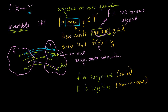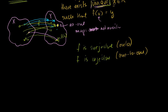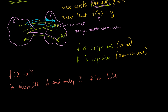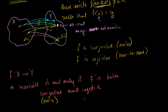Using the terminology from the last video, we can restate the condition for invertibility: a function mapping from domain X to codomain Y is invertible if and only if f is both surjective and injective. Equivalently, f is invertible if and only if f is onto and one-to-one. These are fancy ways of saying: for every y in our codomain, there is a unique x that f maps to it — not more than one, and every y does get mapped to.